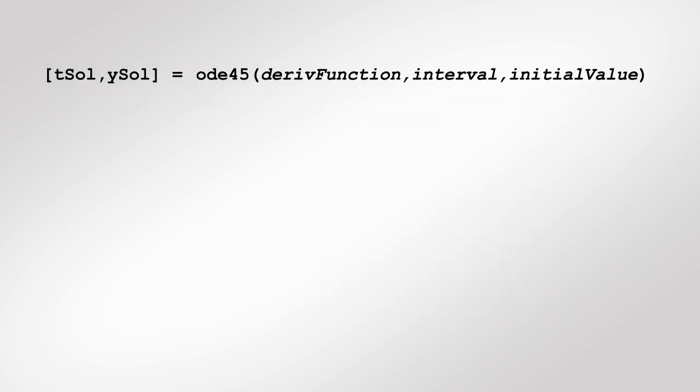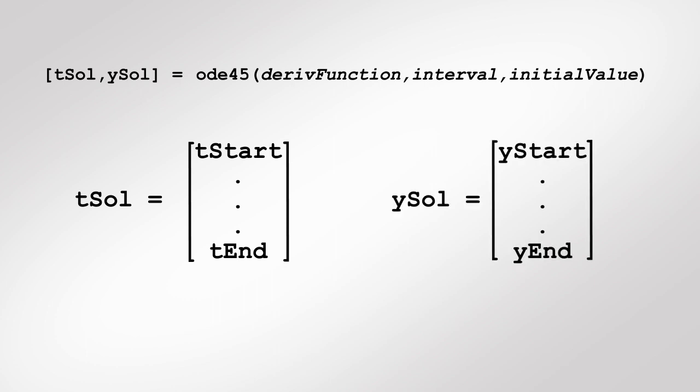The ODE45 function returns two outputs. The first is a column vector of values of the independent variable, chosen automatically by the solver, where a solution has been approximated. The second output is a column vector of the corresponding solution values.